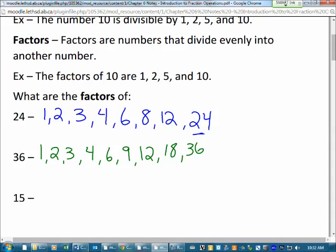Okay, now using our words here, factor. Use the word factor to describe these numbers here. We would say that 1, 2, 3, 4, 6, 8, 12, and 24 are factors of 24. 1, 2, 3, 4, 6, 9, 12, 18, 36 are factors of 36.